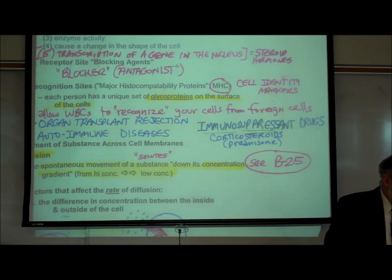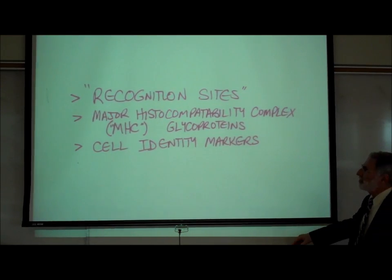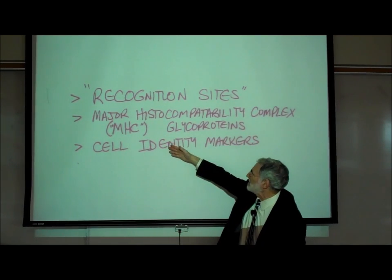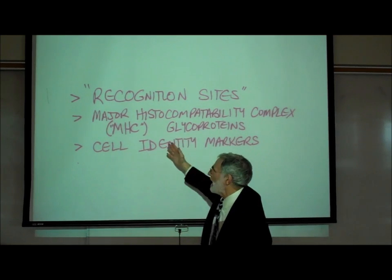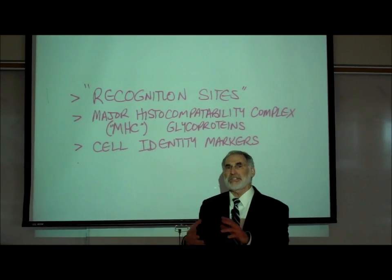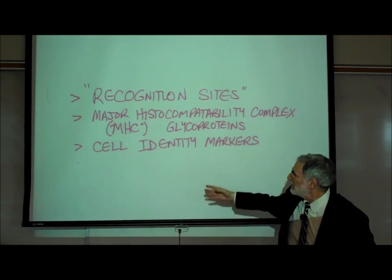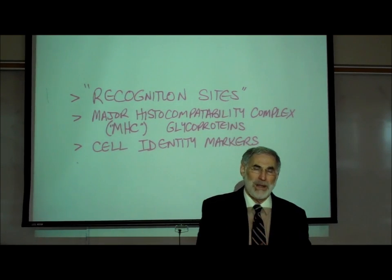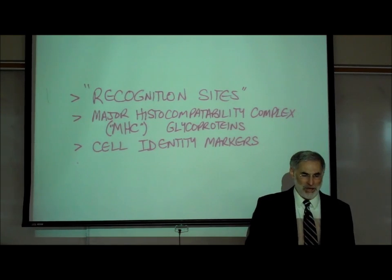These recognition sites actually go by a number of names. They are referred to as recognition sites, and also known as major histocompatibility complex, or MHC, glycoproteins. The meaning behind histocompatibility is that it indicates which cells are compatible to the body and which cells would not be. They are also known as cell identity markers because they are used by the white blood cells to uniquely identify which cells belong to you and which don't.